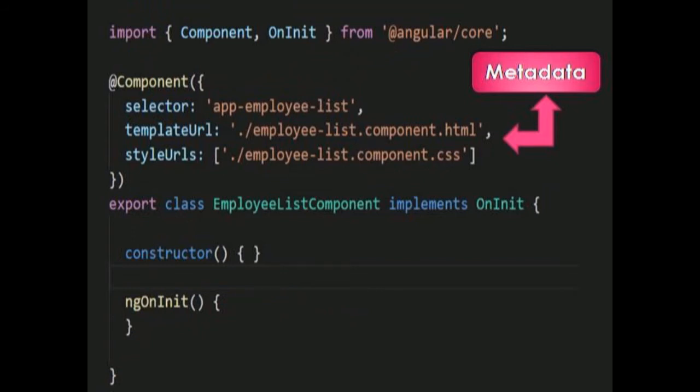The next building block is Metadata. Metadata tells Angular how a class should be processed. We define metadata using decorators. While defining any component, we need to tell Angular that this is a component by using metadata on the class via the @Component decorator.